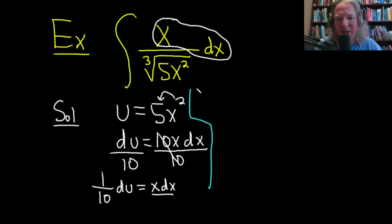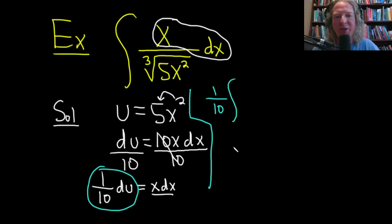So the x dx is going to become 1 tenths du. I'm going to pull out the 1 over 10. Then we have the integral symbol, and then we have just the du. So du, I'll put it up top. And on the bottom, we have the cube root of 5x squared. But 5x squared, that entire thing is u. This is the cube root of u.